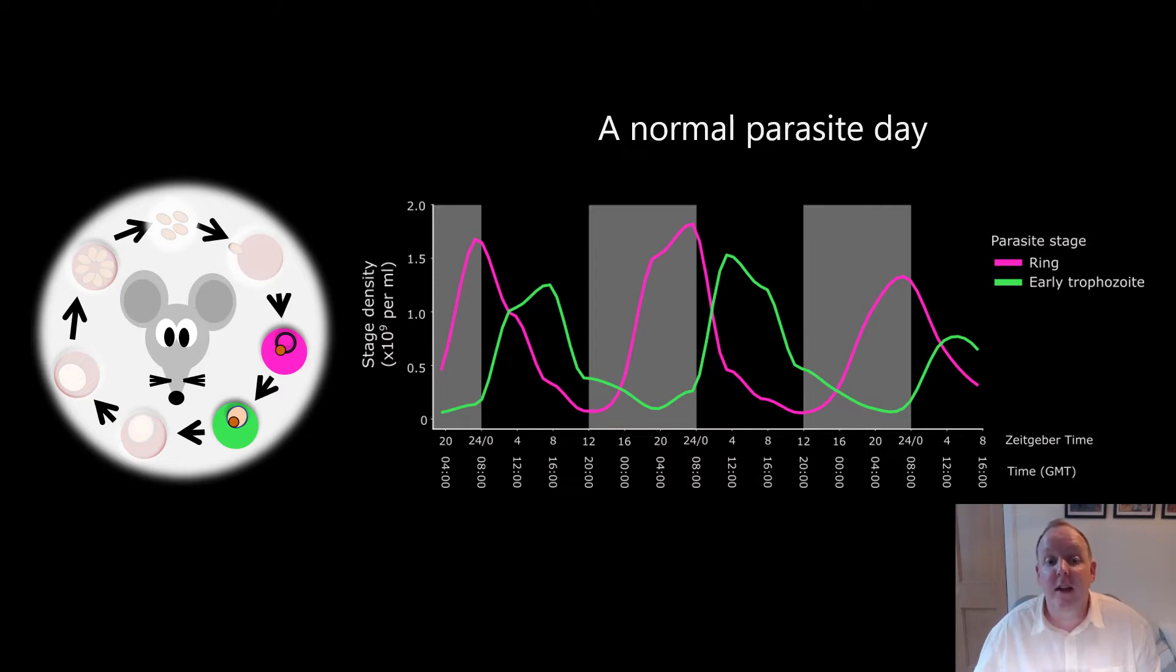These then disappear in a day as they develop into the next stage, the trophozoites, in green. We believe these cycles are important to malaria parasites.